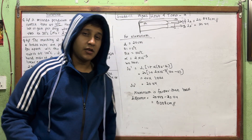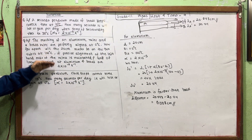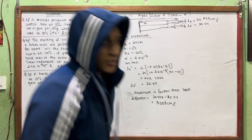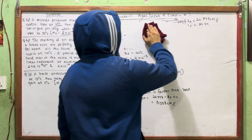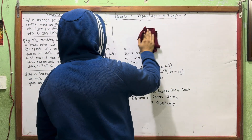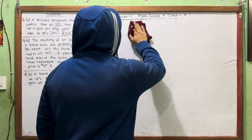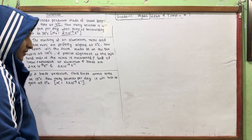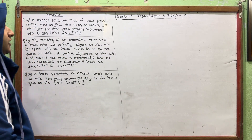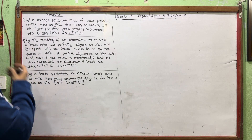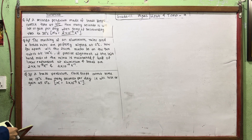You have to practice this type of question. If we have time, we can do the pendulum with a similar question as well. We may get a tricky or normal question on this in the exam. Question number 3: A brass pendulum clock keeps correct time at 15 degrees Celsius. How many seconds per day will it lose or gain at 0 degrees Celsius?